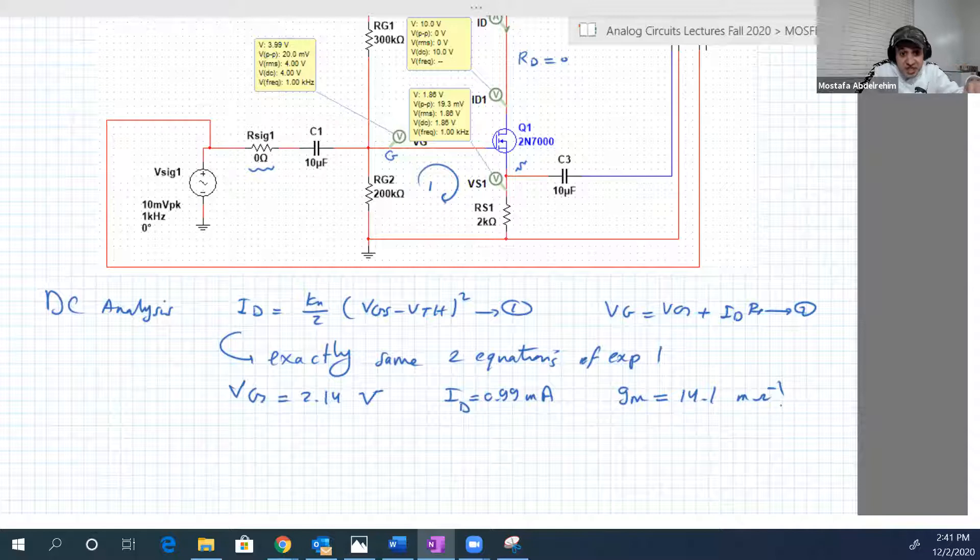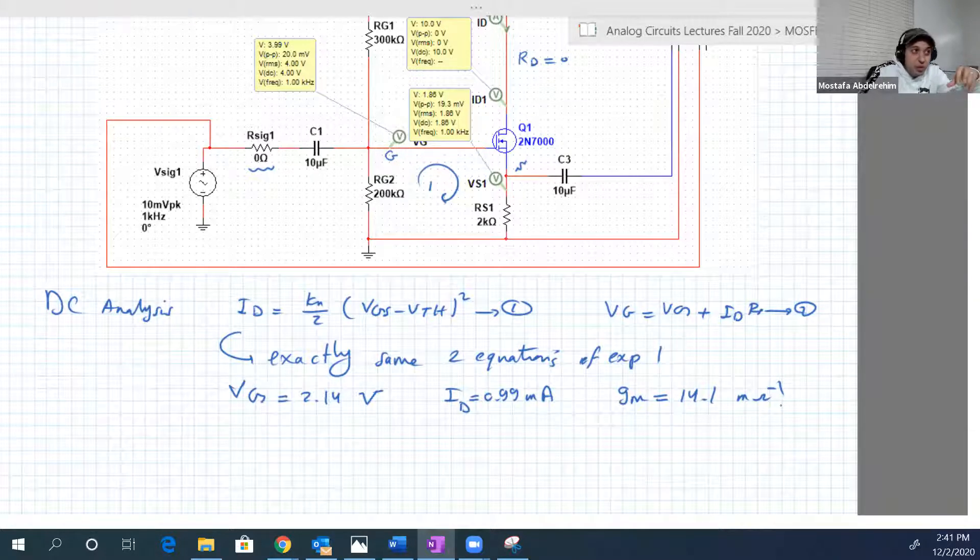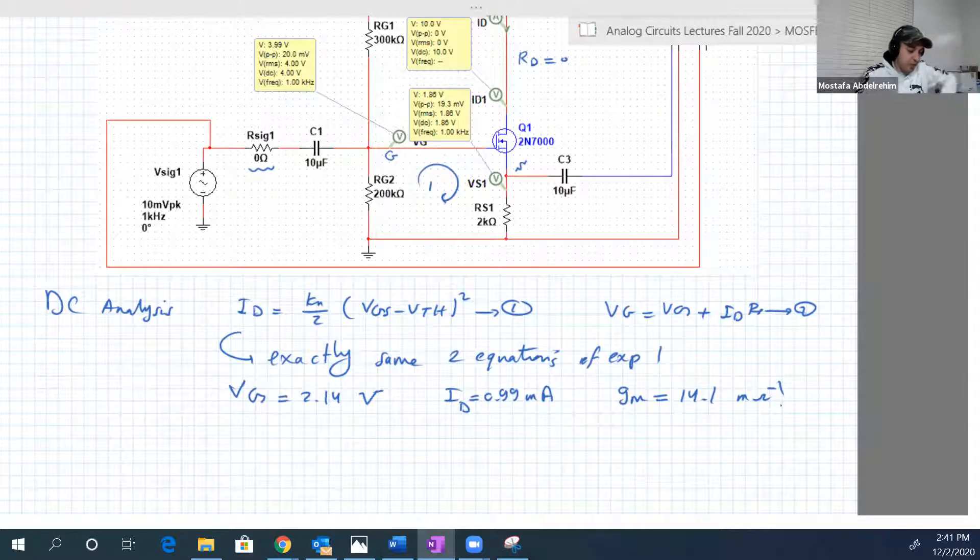What really changes here is VDS, so because RD now is 0, so if you calculate VDS, you will find it different.